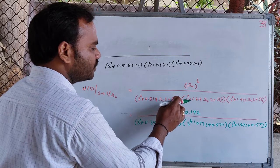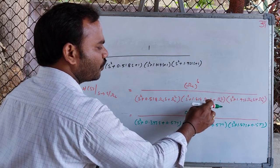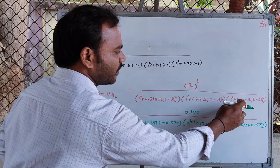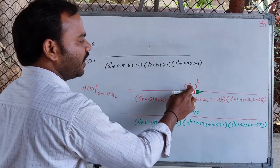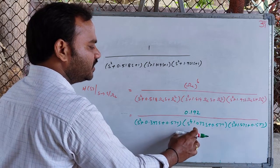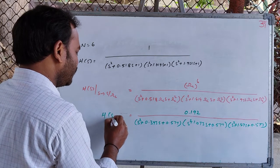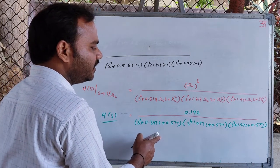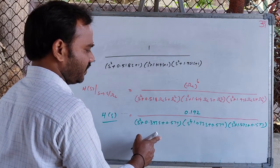After substituting S with S/Ωc, we get Ωc⁶ in the numerator divided by (S² + 0.518·Ωc·S + Ωc²)(S² + 1.414·Ωc·S + Ωc²)(S² + 1.932·Ωc·S + Ωc²). Substituting the value of Ωc = 0.7594 into this expression yields the required analog transfer function at the desired cutoff frequency of the Butterworth filter.